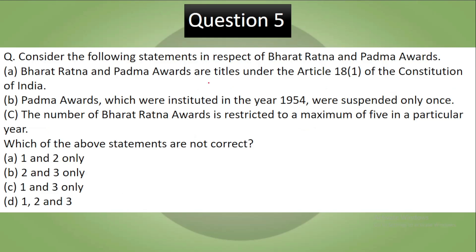Question 5: Consider the following statements about Bharat Ratna and Padma awards. Statement 1: Bharat Ratna and Padma awards are titles under Article 18 of the Constitution. Statement 2: Padma awards, instituted in 1954, were suspended only once. Statement 3: The Bharat Ratna award is restricted to a maximum of five in a particular year. Which of the above statements are not correct?